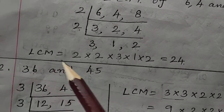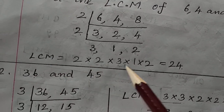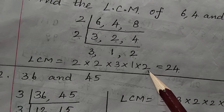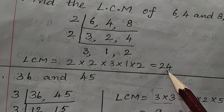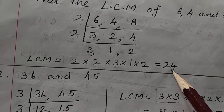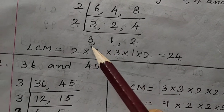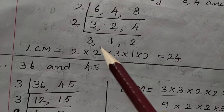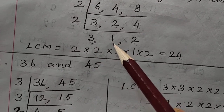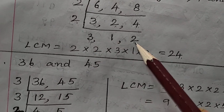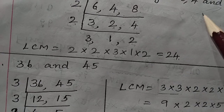LCM = 2 × 2 × 3 × 1 × 2 = 24. The common factor of 3 and 1 is 1, and the common factor of 1 and 2 is 1, so we stop here.